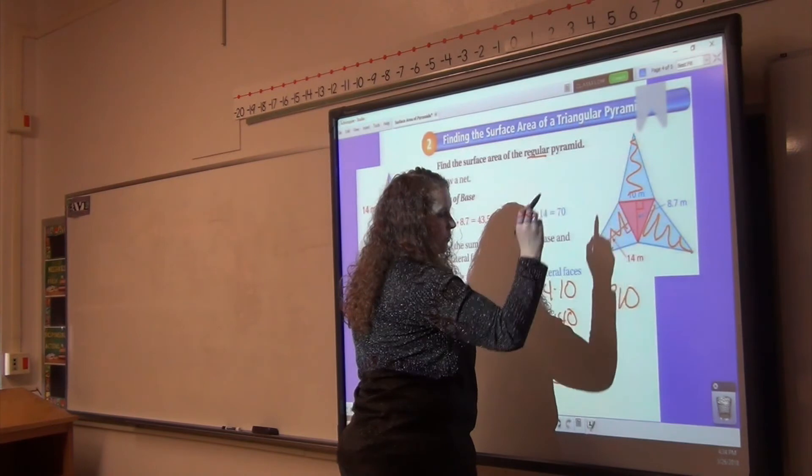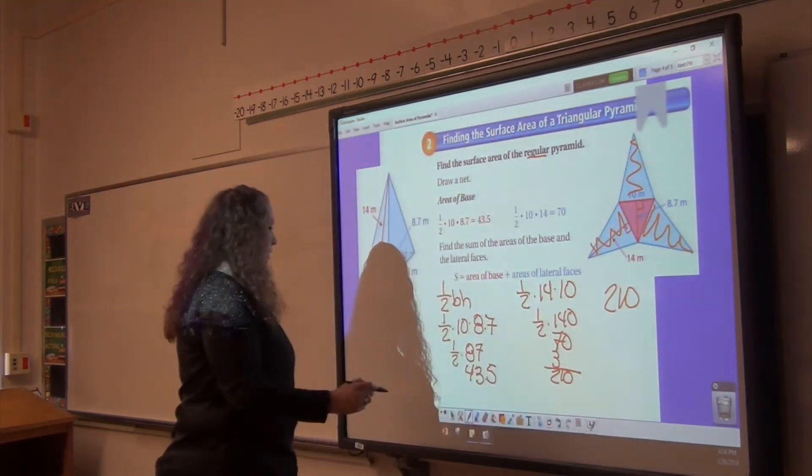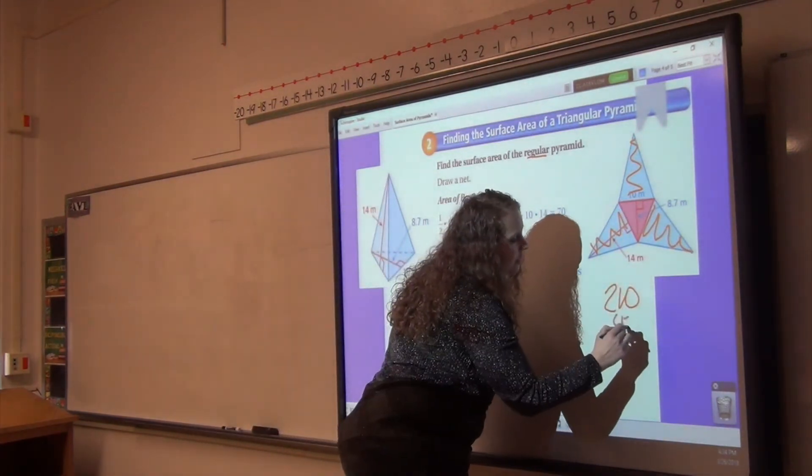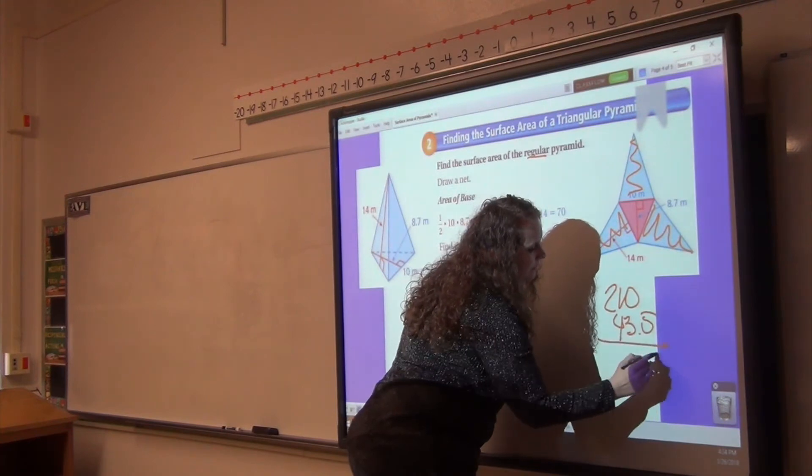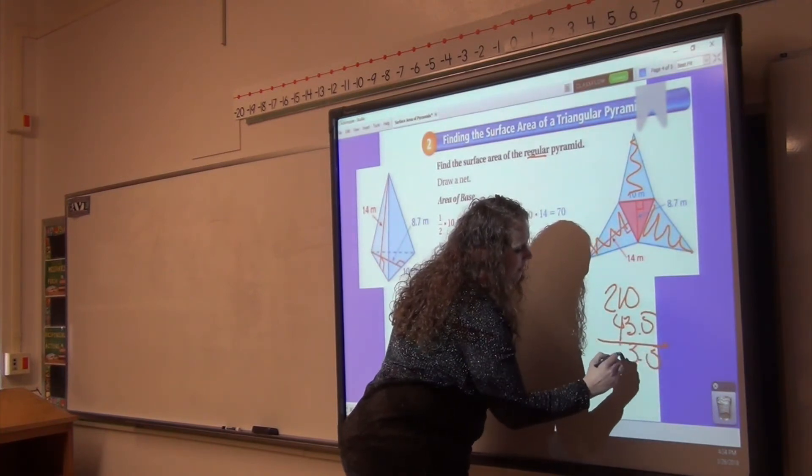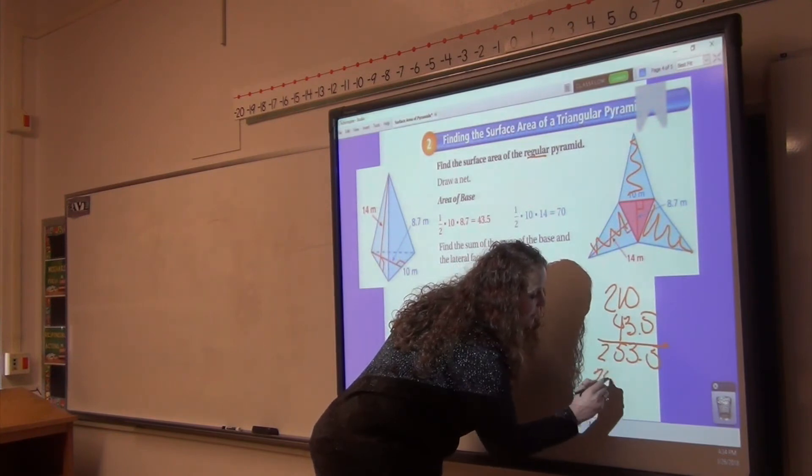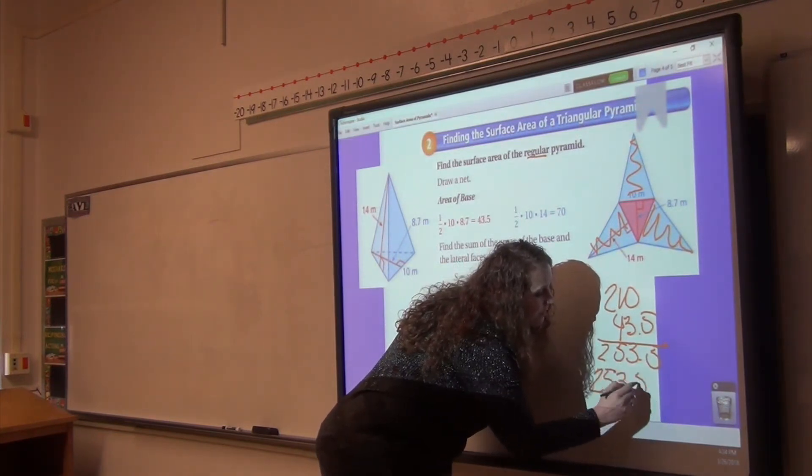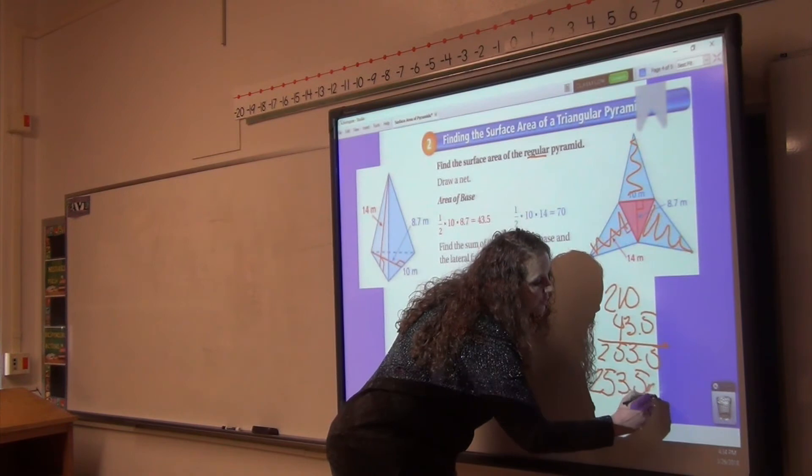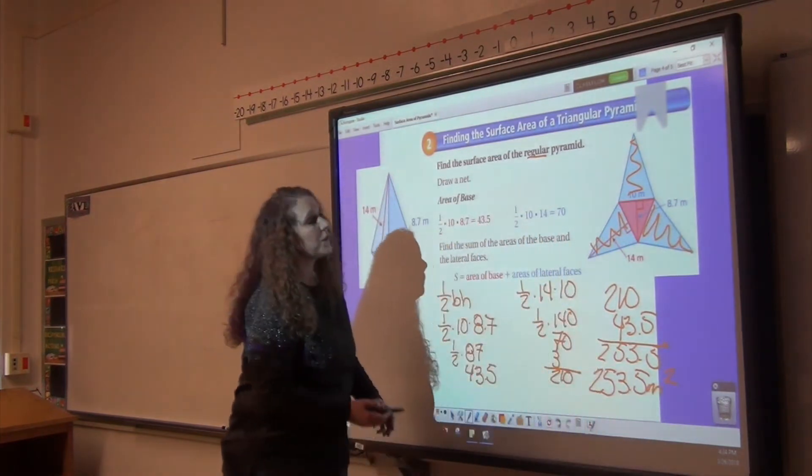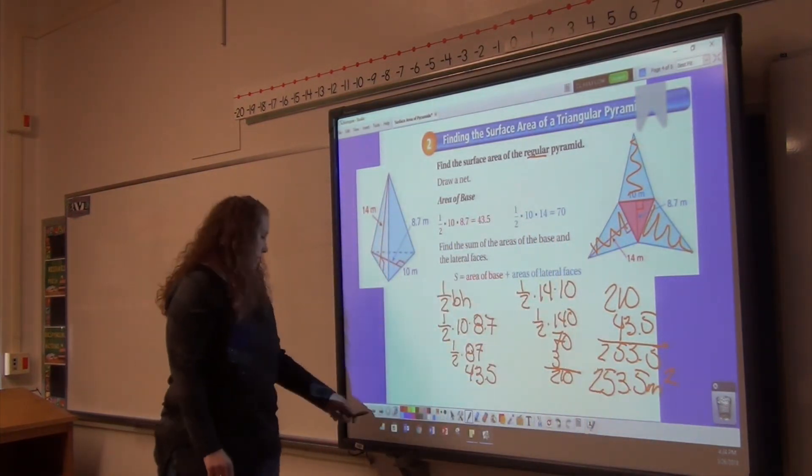So the red one is 43.5. 210, which is the blue triangles, plus 43.5. I'm going to rewrite that because that was terrible handwriting. 253.5 meters squared is the surface area of that triangular pyramid.